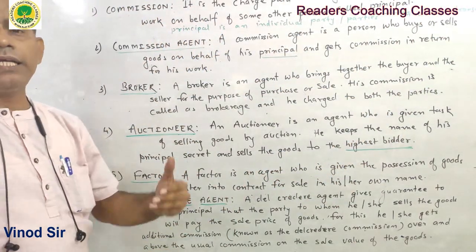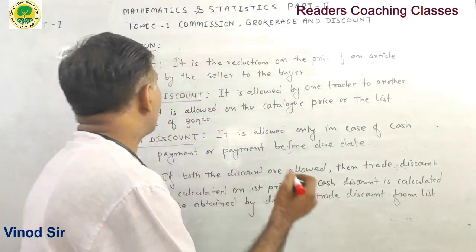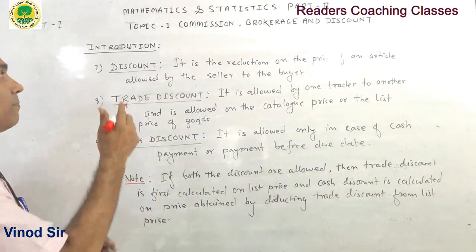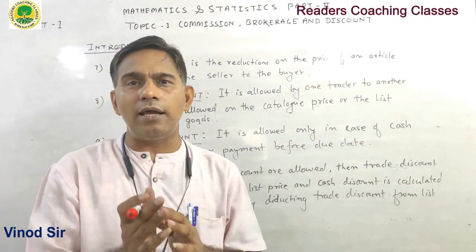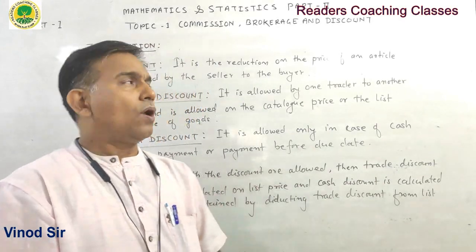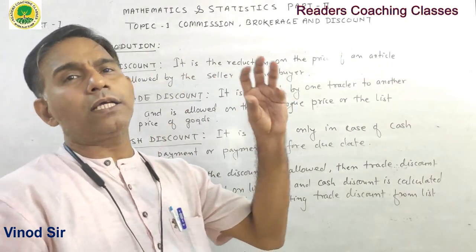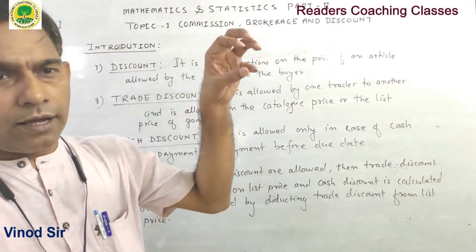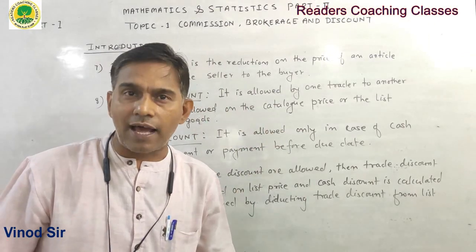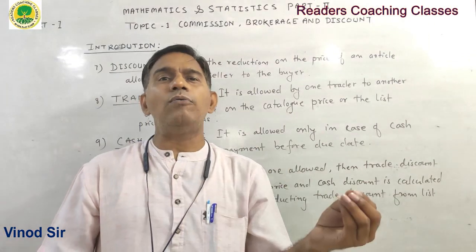Now we will discuss discount, trade discount, and cash discount. A discount is generally allowed by the seller to the buyer on the purchase of goods. It is a reduction on the price of an article. There are two types of discount: trade discount and cash discount.